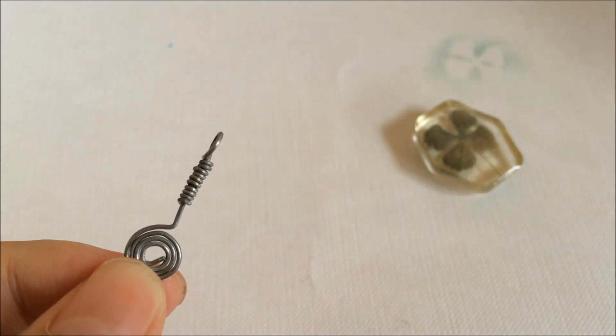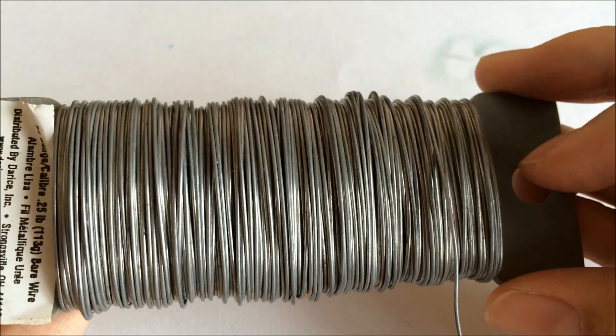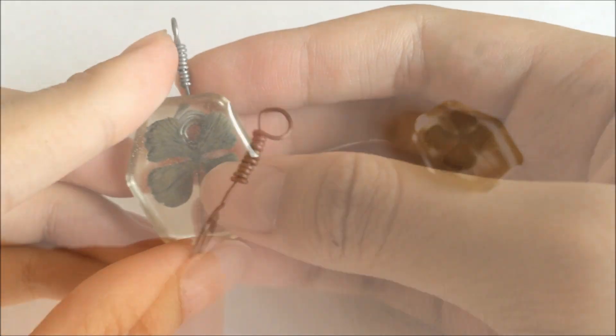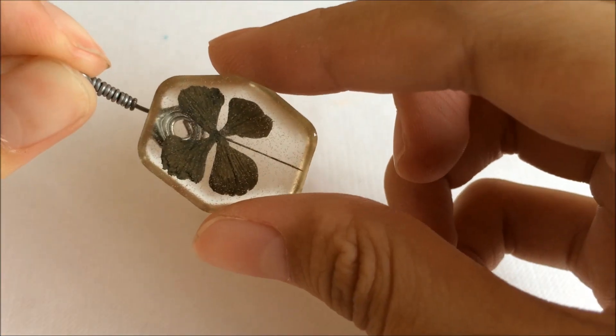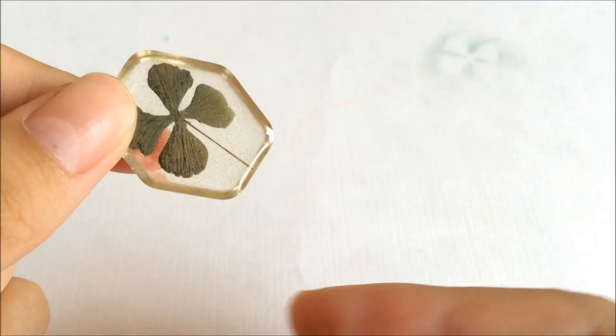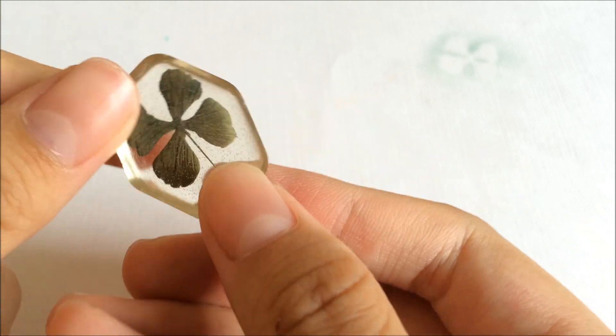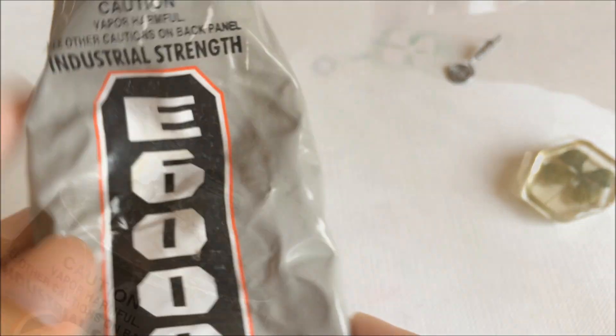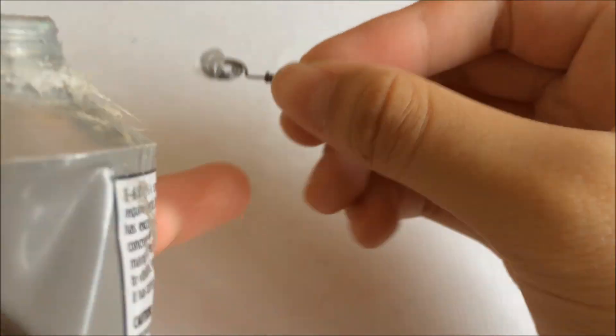You'll need a bell to glue it to the back since I didn't get to add eye pins. I made this bell myself using wires. I'll be having a tutorial later on in the future. I'll be using this E6000 glue to glue them together.